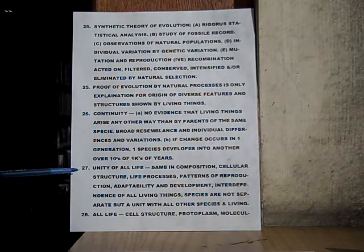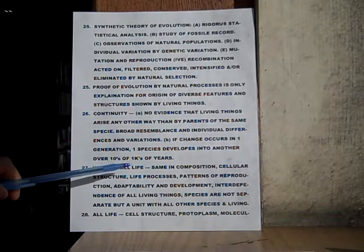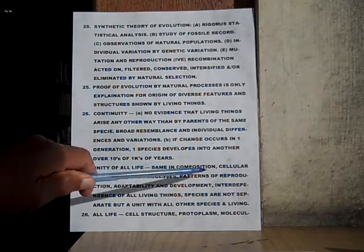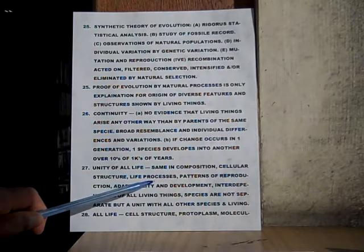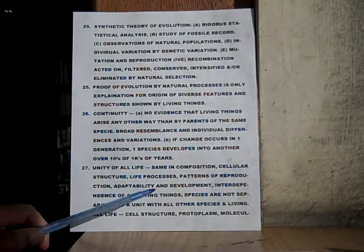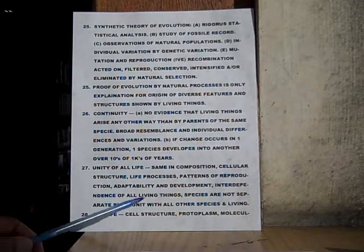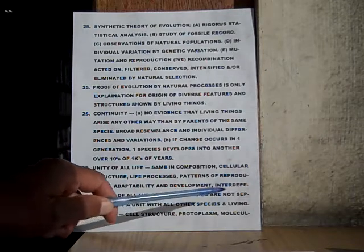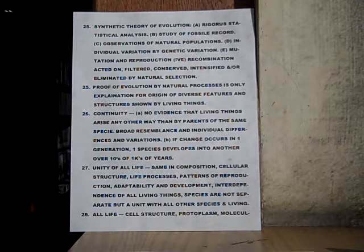Number twenty-seven: unity of all life. All life is a unity — they are the same in composition, cellular structure, life processes, patterns of reproduction, adaptability and development. Interdependence of all living things. Species are not separate but a unit with all other species and living things.